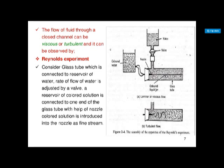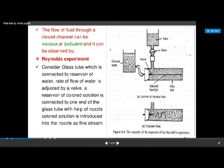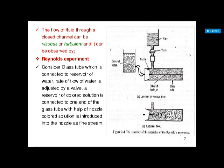He named it laminar flow because the fluid appears to move in layers — in separate laminar layers. So the fluid appears to flow in distinct parallel layers, which is why he named it laminar flow.